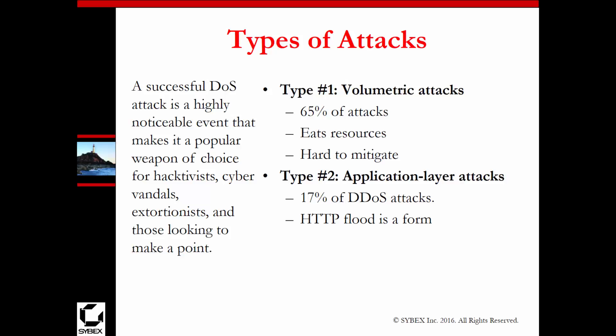Types of denial of service attacks generally fall into two areas: volumetric and application layer attacks. Application layer attacks could involve flooding HTTP packets to a destination, and that's normally a type of distributed denial of service because there's not one machine doing it — there are several machines doing it. For volumetric attacks, the goal is actually to eat resources, such as opening a TCP handshake and never completing it.